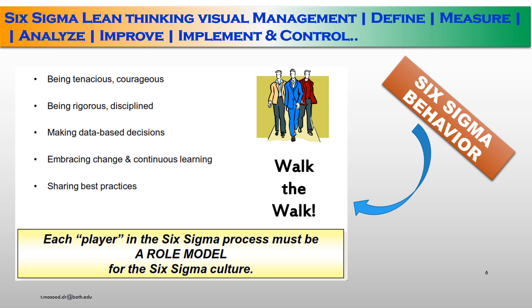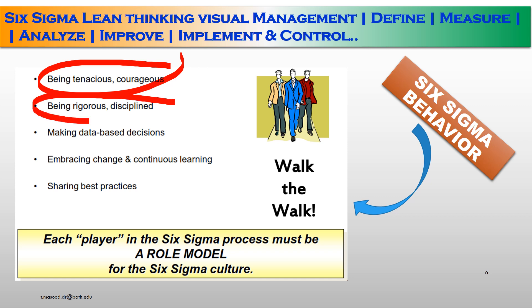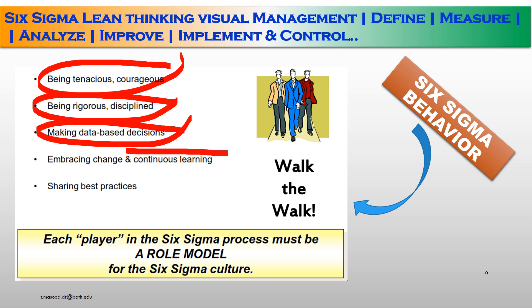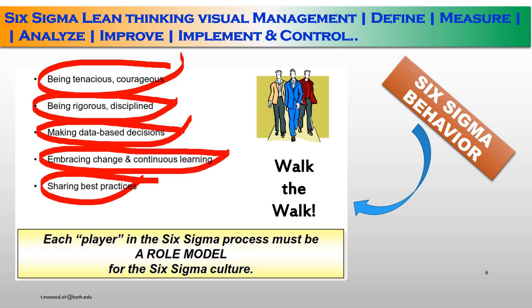Six Sigma behaviors: first, being patient and courteous. Second, being rigorous and disciplined. Third, making data-based decisions. Fourth, embracing change in a context learning process. Fifth, sharing best practices. Each player in the Six Sigma process must be a role model for the Six Sigma culture.